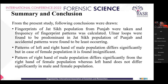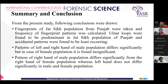Summary and conclusion. From the present study, the following conclusions have been drawn. Fingerprints of the Jat-Sikh population from Punjab were taken and the frequency of fingerprint patterns was calculated. The pattern of the left hand and right hand of the male population differs significantly, but in the case of the female population it was found insignificant. The pattern of the right hand of the male population differs significantly from the right hand of the female population, whereas the left hand does not differ significantly between male and female populations. Thank you.